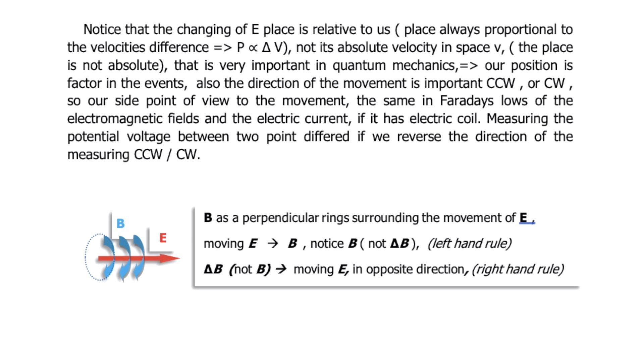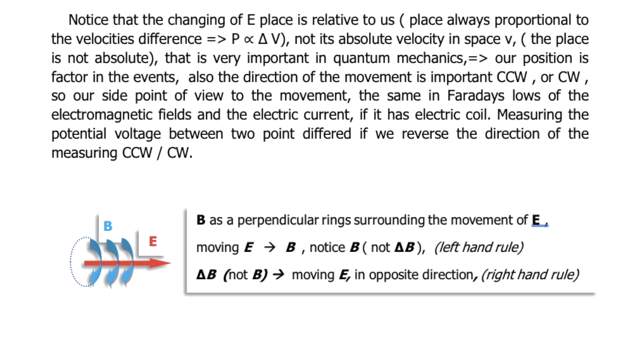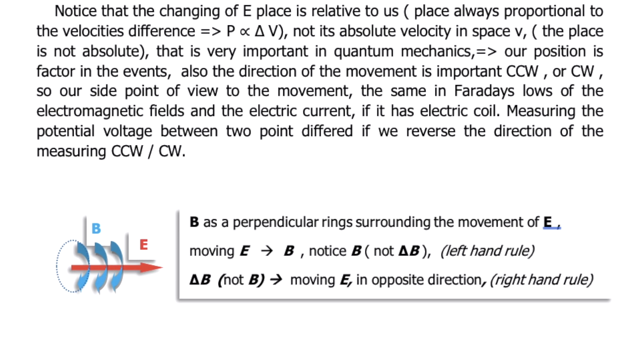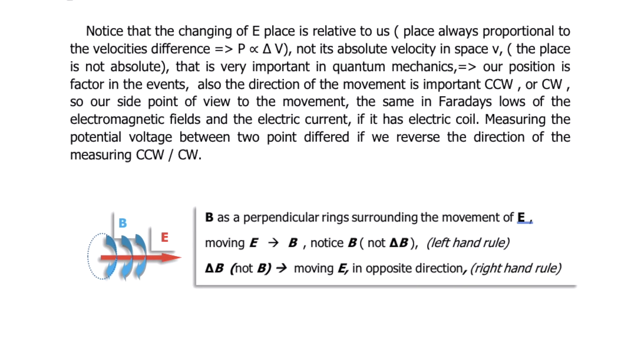Moving E causes perpendicular magnetic rings P surrounding the movement of E. Notice: P, not delta P. By the left-hand rule, delta P is not B. Moving E in the opposite direction gives delta P, not P — that follows the right-hand rule.